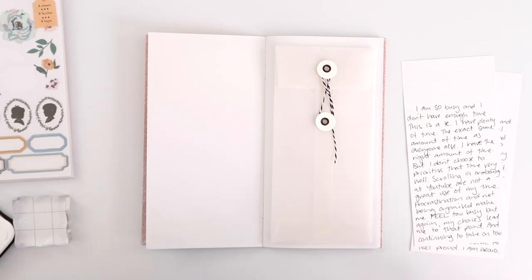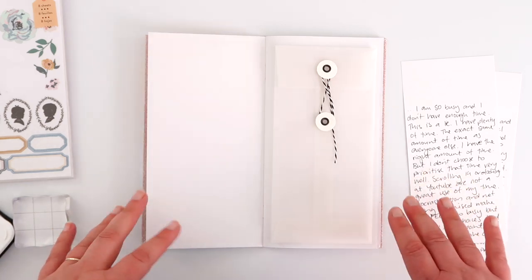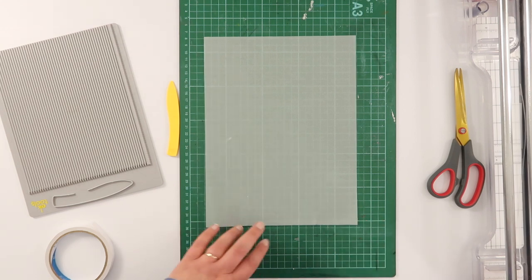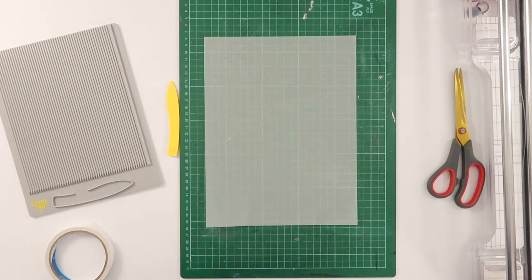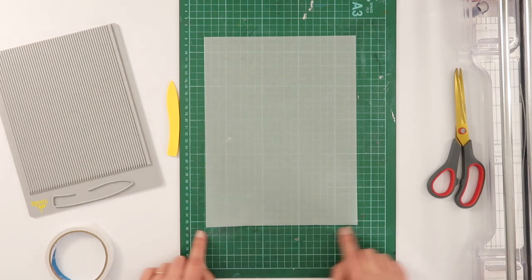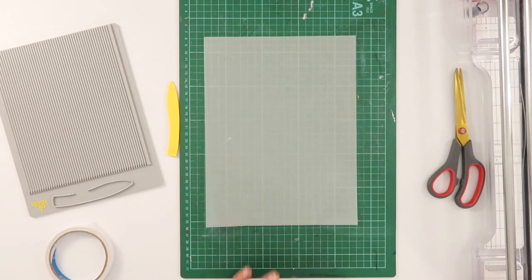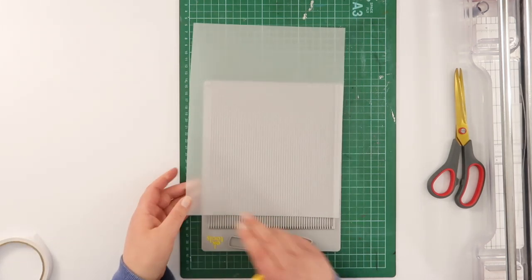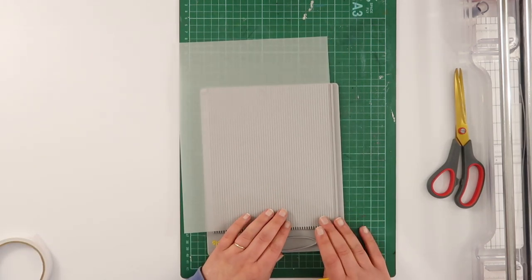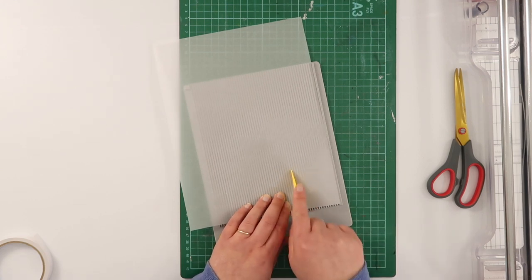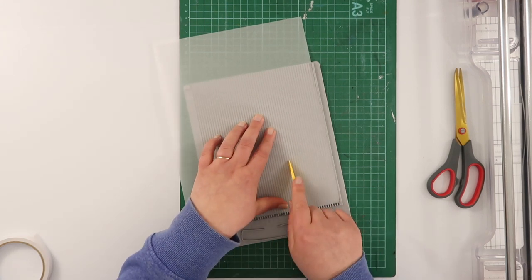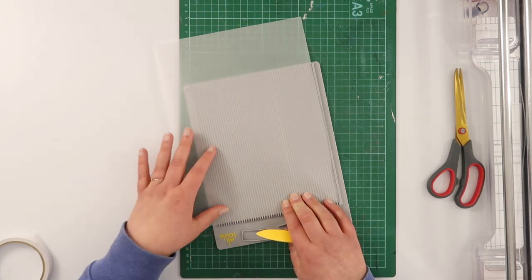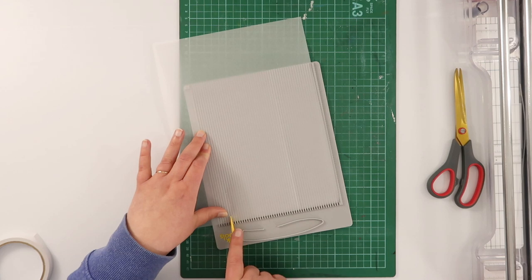To create your little vellum envelope, you need to start with a piece of vellum that is eight and a quarter inches wide by 11 inches high. I'm gonna use my scoreboard just to make things a little bit easier. The first score I want to make is at two and a quarter—this is some very light vellum—and the second score line is going to be at six inches.